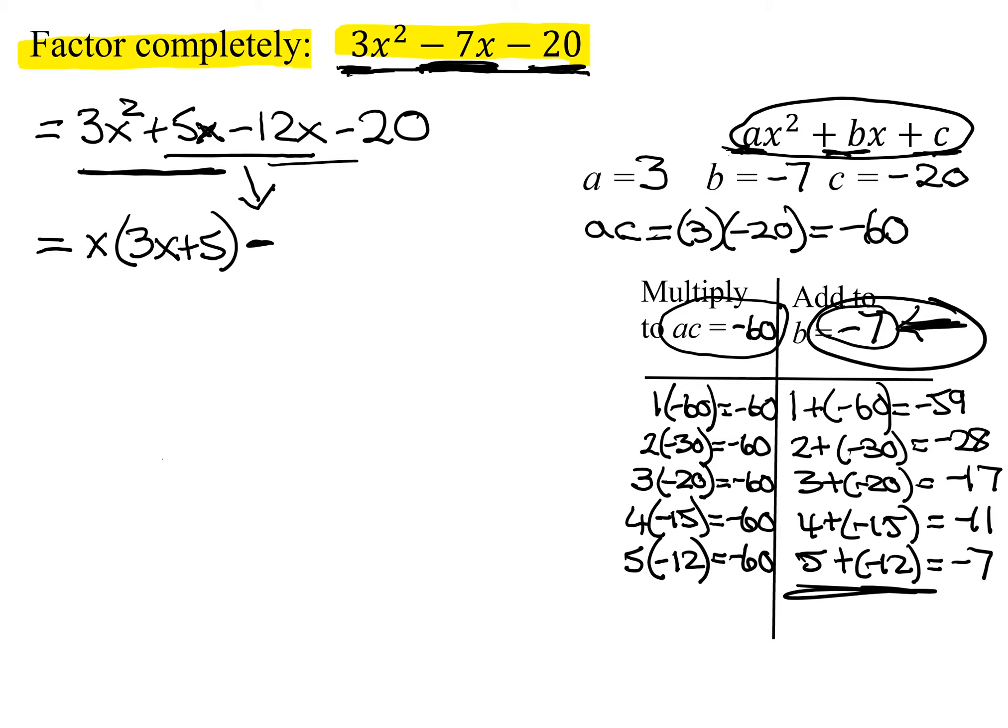And now what do the last two terms have in common? Well, 2 definitely divides into both of them. Does anything bigger? Yeah, I think 4 divides into both of them too. So if I pull out a negative 4, now this is tricky when you pull out a negative. When you pull out a negative, it's going to change both of these signs here. So negative 4 goes into negative 12x positive 3x times. Negative 4 divides into negative 20 plus 5.